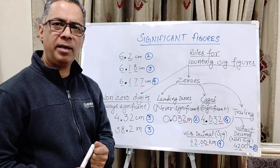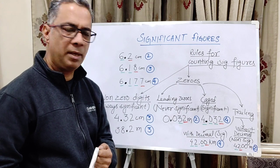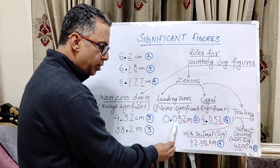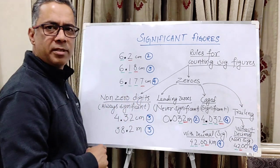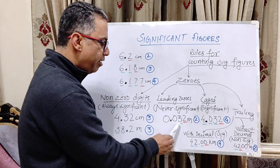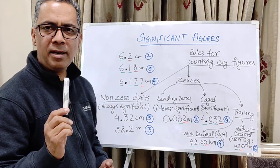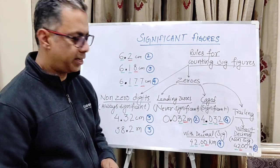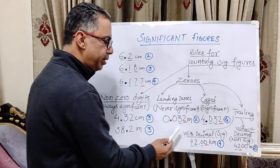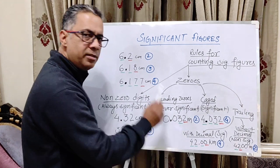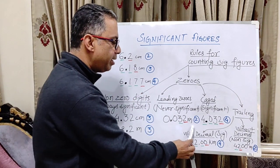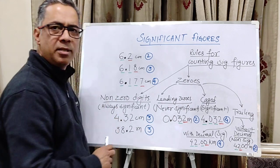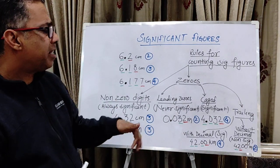Any confusion, if at all, arises with zeros. Let's have a look at zeros. Leading zeros are zeros to the left of the first non-zero digit. These zeros to the left of the first non-zero digit are never significant in any science — in physics, in chemistry. So a number like 0.12 has one certain digit and one uncertain digit, giving it two significant digits. The leading zeros are never significant.